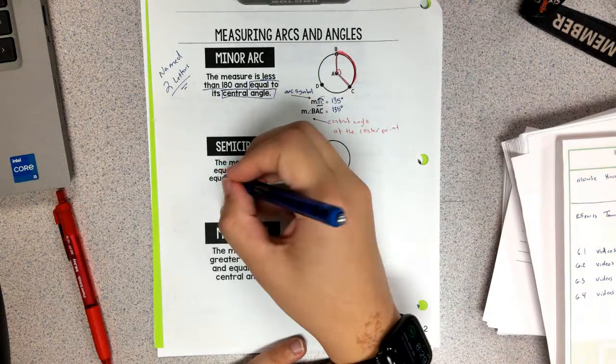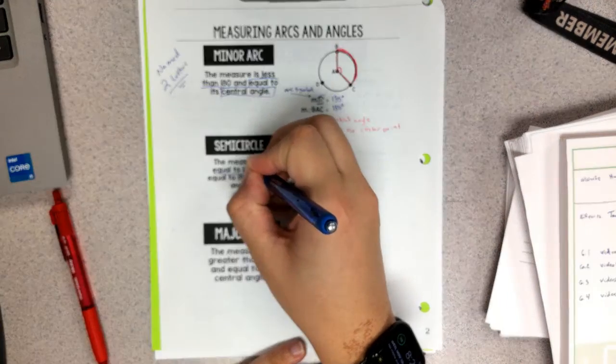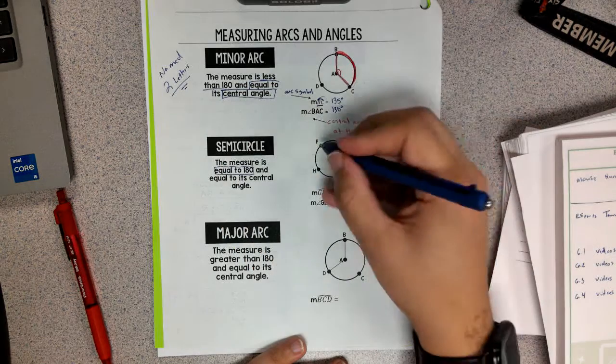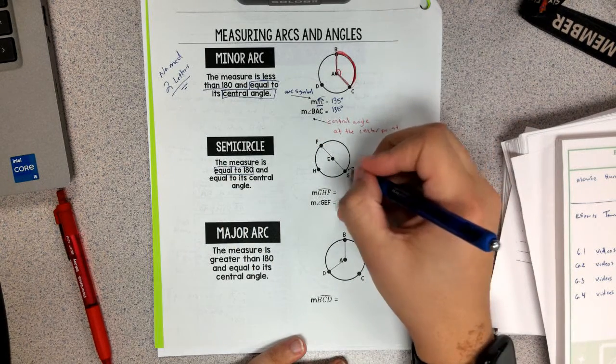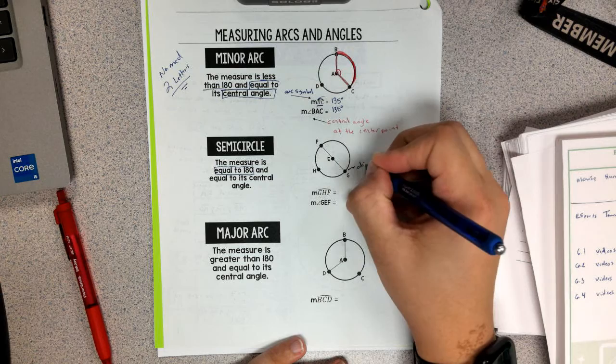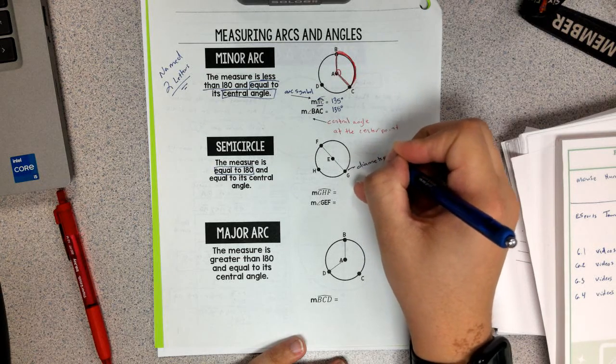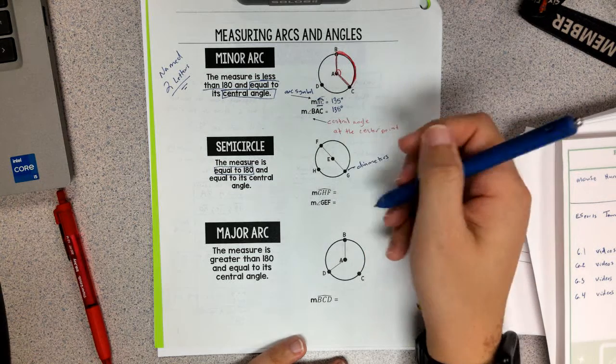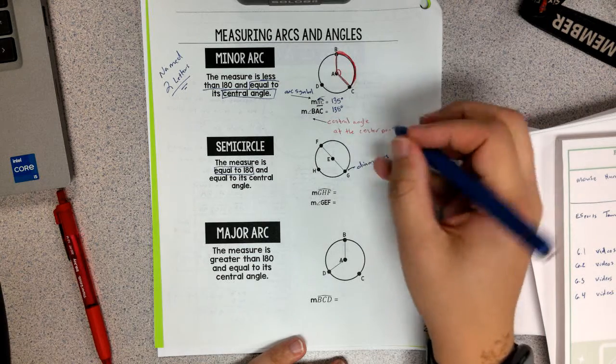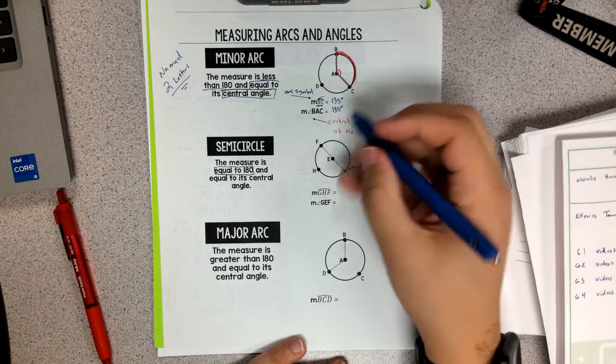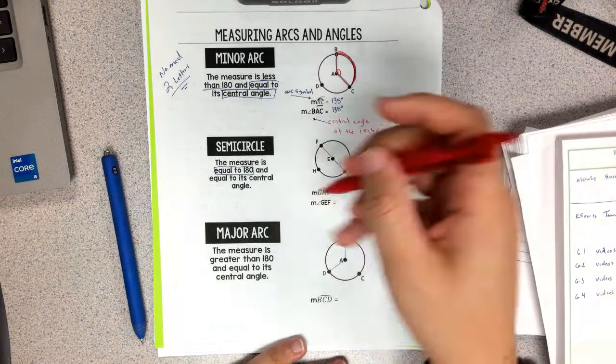Next up, we have semicircle, which is equal to 180 degrees. A semicircle is formed by a diameter. Diameters help us form semicircles because a diameter cuts a circle in half and allows for it to be 180 degrees on either side.